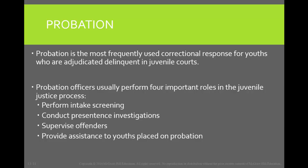Everything that must occur for adult probation has to occur with juvenile probation too. Probation officers are still required to conduct a PSI in order to determine the proper sentence. They must provide treatment services and other forms of treatment to help the juvenile, supervise them, and make sure they're not violating the terms of their conditions. If they are violating their conditions, the probation officer can revoke the probation.